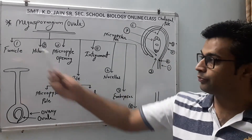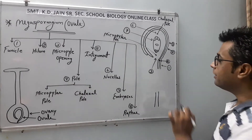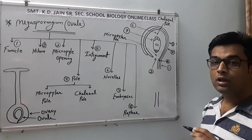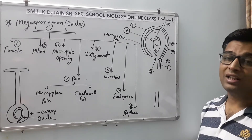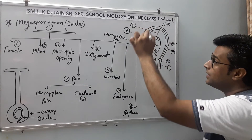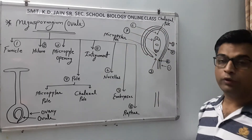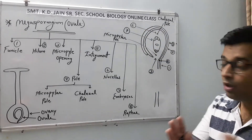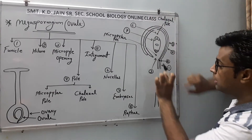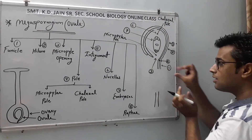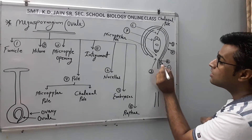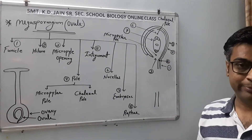Hilum is the point of attachment between the Funicle and the complete body of the Ovule. It is located at the bottom, where the Funicle connects to the Ovule body.